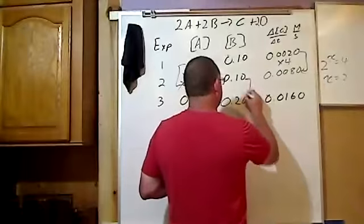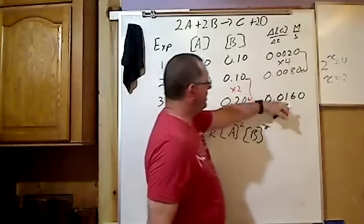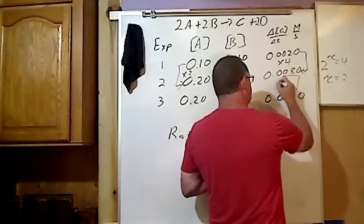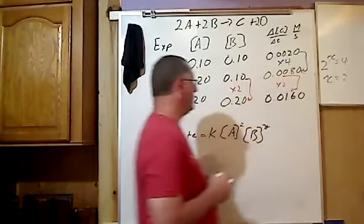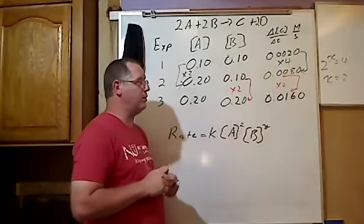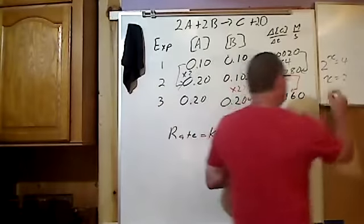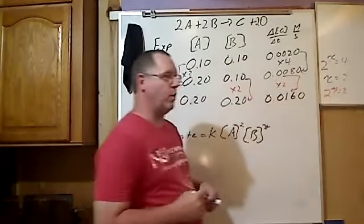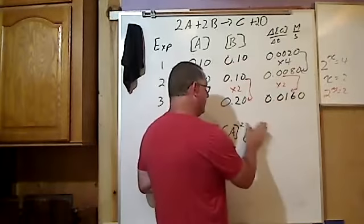In this case, this is times 2. And if I take 0.0160 divided by 0.0080, I find that this also is a times 2. So in this case, 2 to the y equals 2. Well, we know from that that y is then equal to 1. And this gives us our rate law.